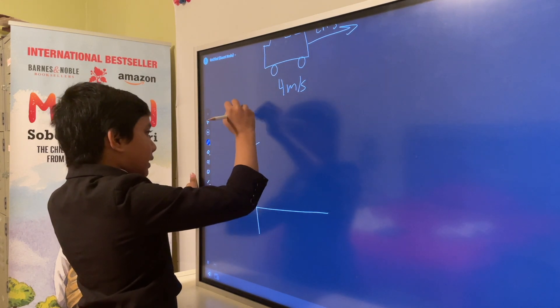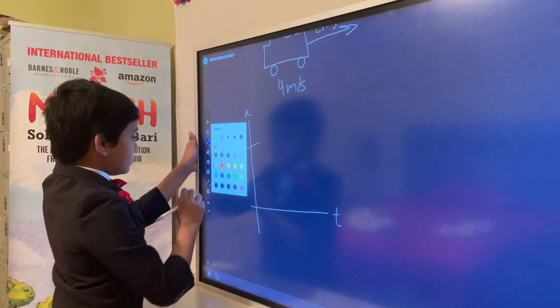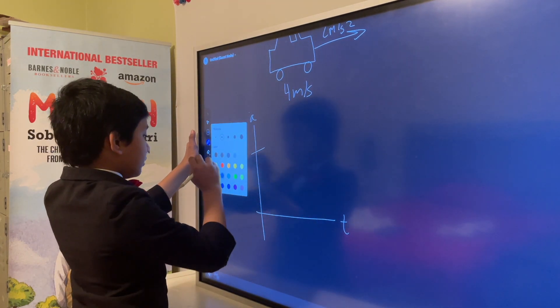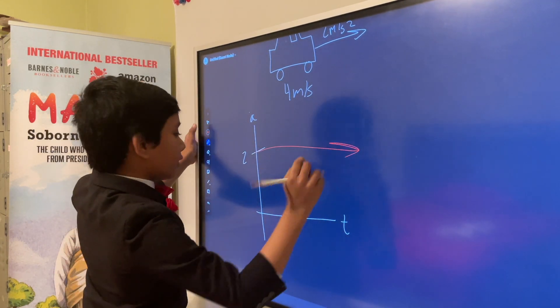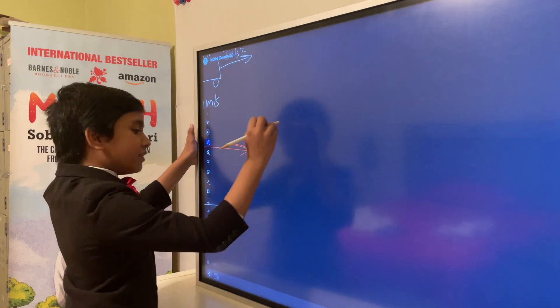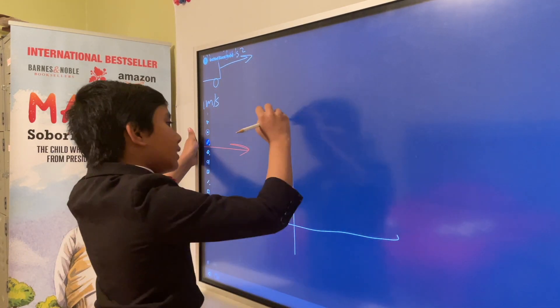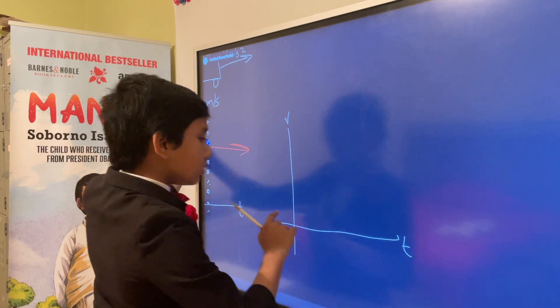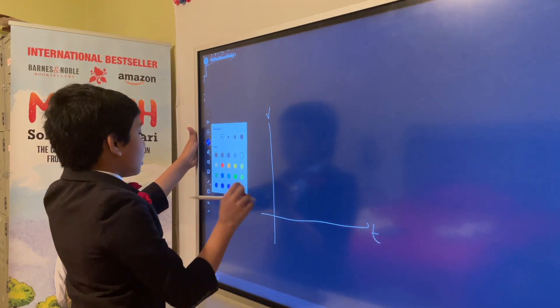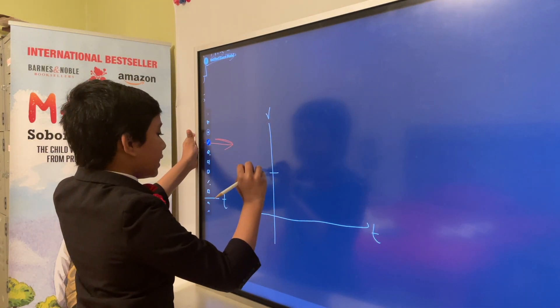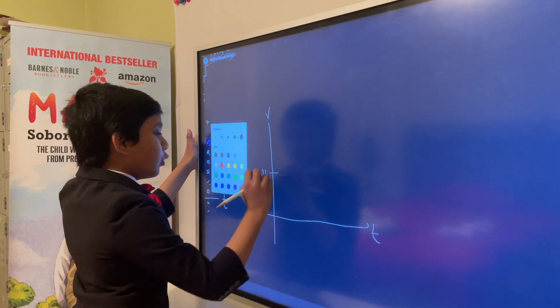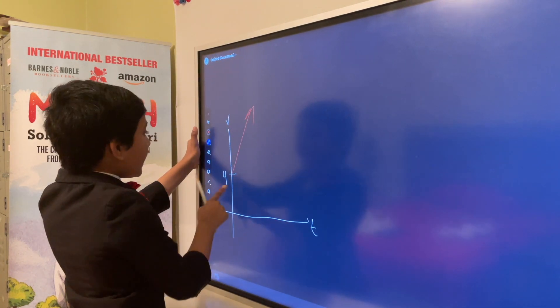The acceleration graph is the same like before. The velocity graph, as we know, is going to be a little different. That means that since it already starts at 4 and goes up from there, it's going to look something like this.